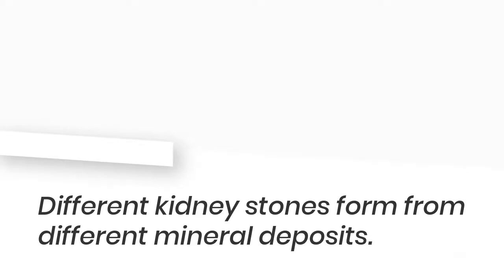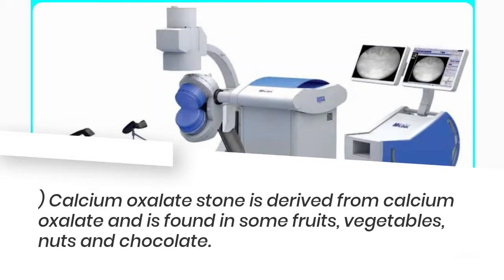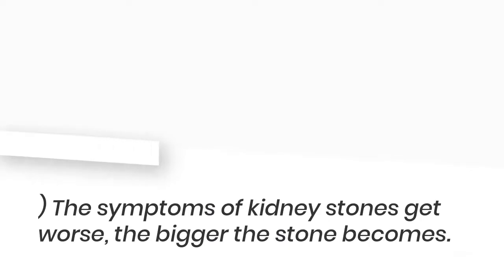Different kidney stones form from different mineral deposits. Calcium oxalate stone is derived from calcium oxalate and is found in some fruits, vegetables, nuts, and chocolate. The symptoms of kidney stones get worse the bigger the stone becomes.